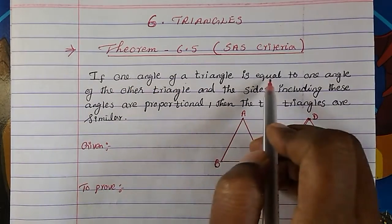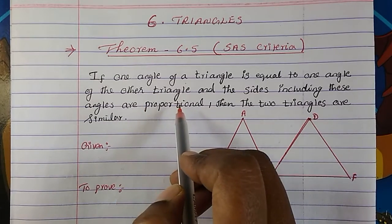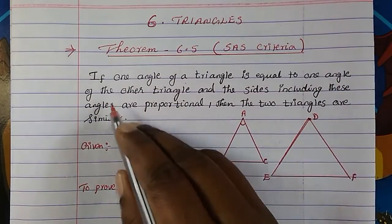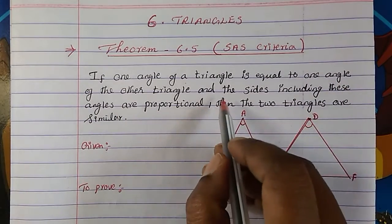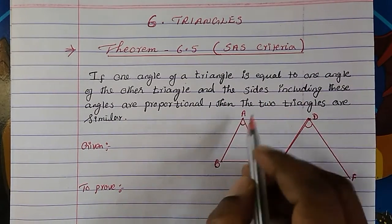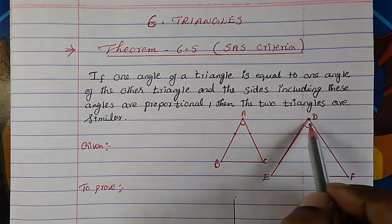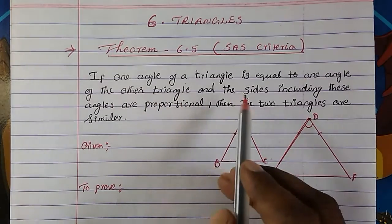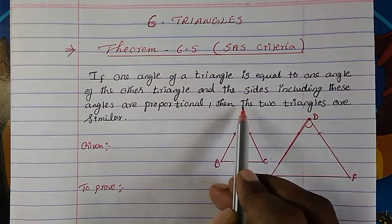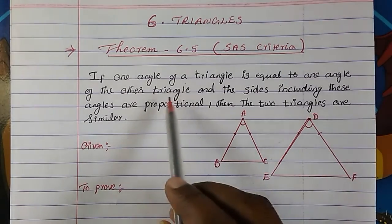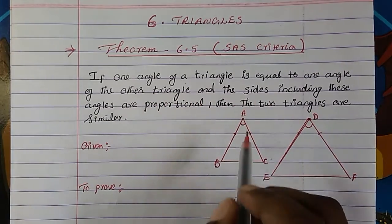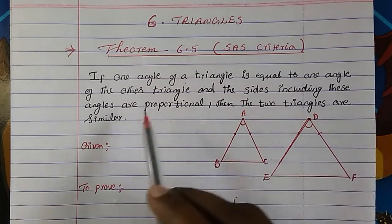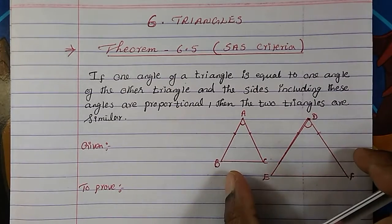If one angle of a triangle is equal to one angle of the other triangle, and the sides including these angles are proportional, then the two triangles are similar. So this angle is equal to this angle, and this side upon this side, and this side upon this side — the ratios are proportional. Then these two triangles are similar.